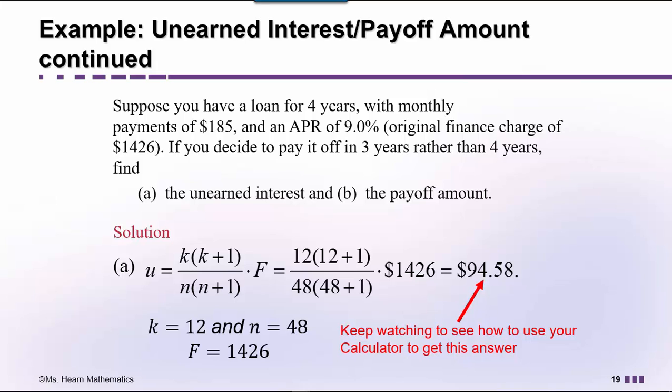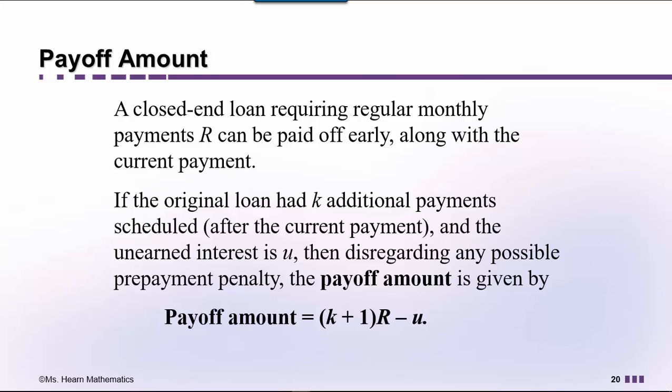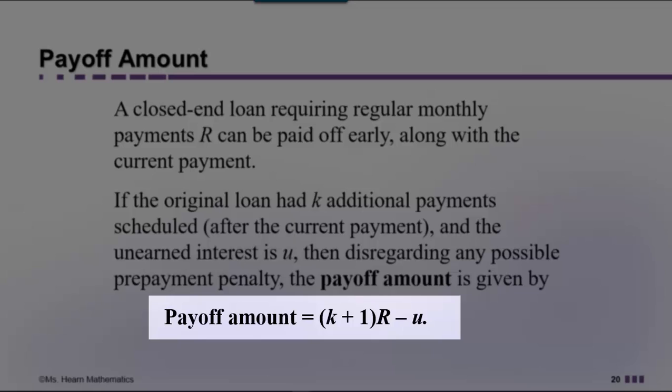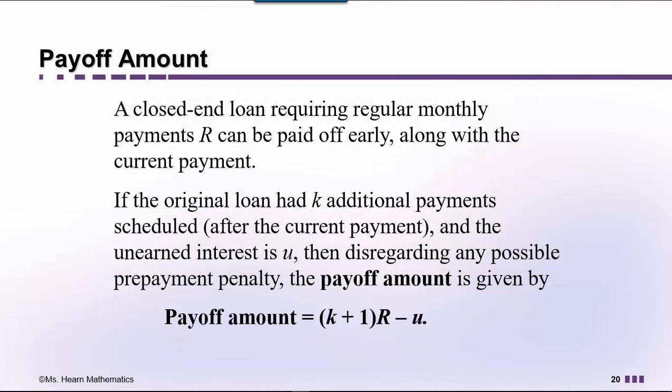Now let's talk about Part B, the payoff amount. A closed-end loan requiring regular monthly payments of amount R can be paid off early along with the current payment. If the original loan had K additional payments scheduled after the current payment and the unearned interest is U, then disregarding any possible prepayment penalty, the payoff amount is given by (K plus 1) times R minus U. Remember, we're talking about K payments being left after this one, so really there are K plus 1 payments to be made. We multiply that times the regular monthly payment R, then subtract the unearned interest we're saving by paying off early. The unearned interest was already calculated to be $94.58.